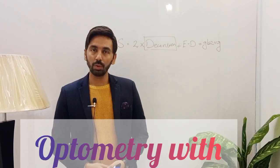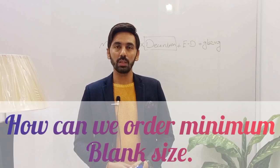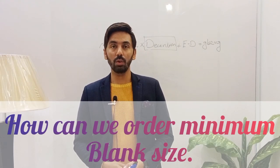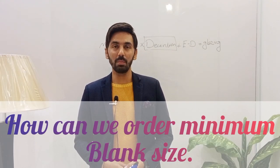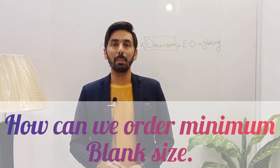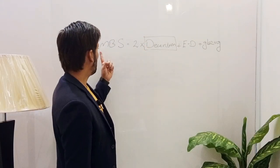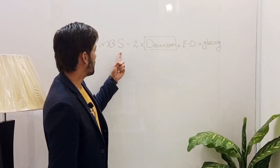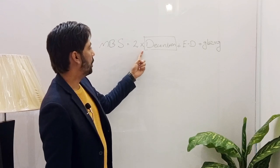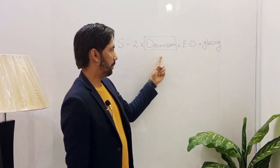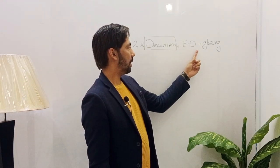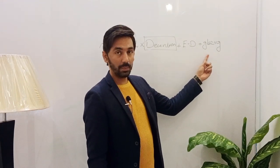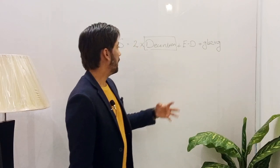This is Khuram and you're watching Optometry with Khuram. Today's topic is about how we can order a proper blank size, or minimum blank size. The formula for the minimum blank size is: 2 × decentration + effective diameter + glazing.